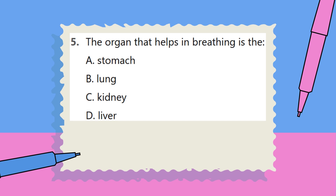Question 5. The organ that helps in breathing is the: A. Stomach. B. Lung. C. Kidney. D. Liver.